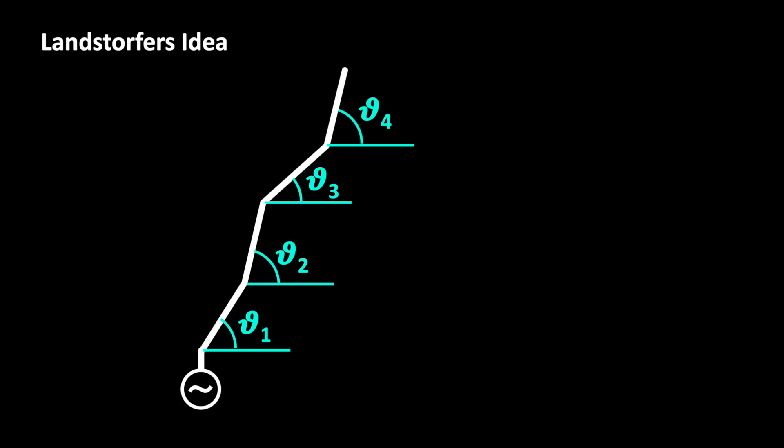This gives us a lot more degrees of freedom compared to our optimization of straight rods. The angles of the structure are not limited. The antenna could theoretically take any arbitrary shape.